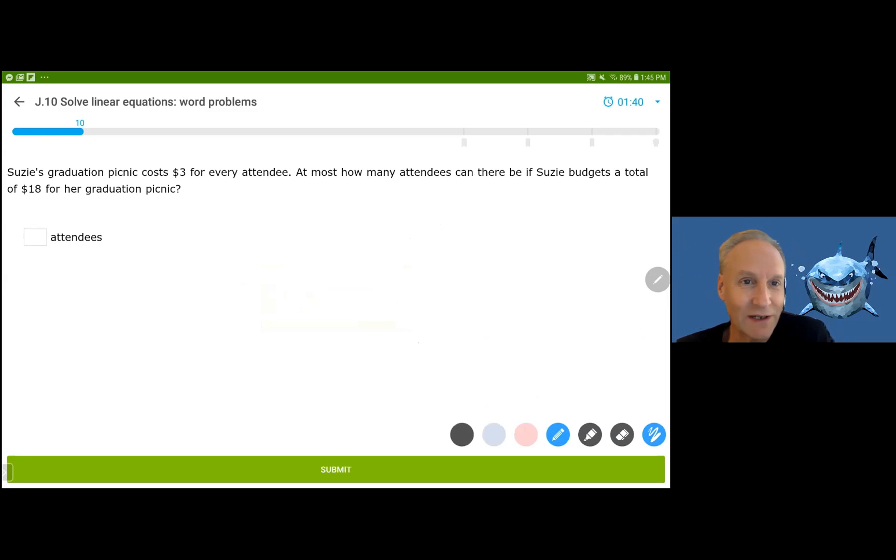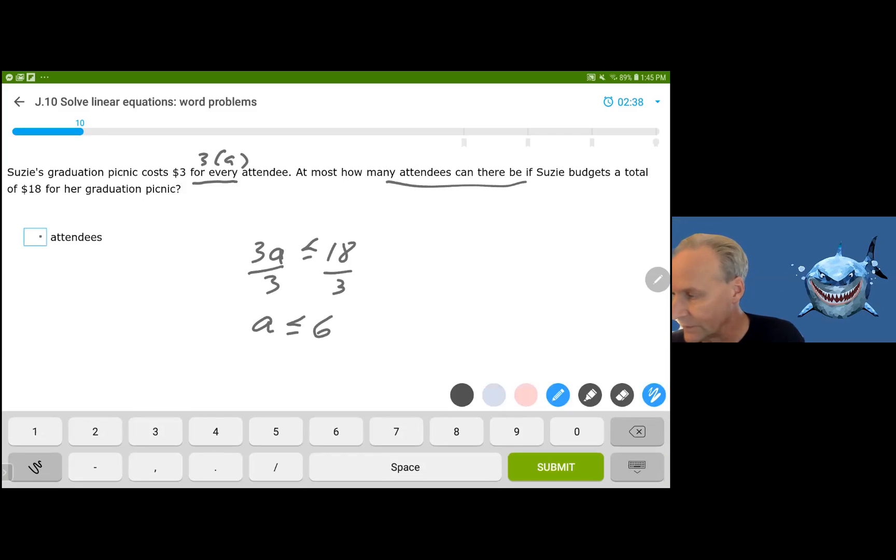So Susie's graduation picnic costs $3 for each attendee. Okay, so we're going to use instead of guests, we're talking about attendees. I'm going to use A for each one. And for every, a good way to think of it is that's multiplying. So it's going to be three times the number of attendees. How many attendees can there be if Susie budgets a total of $18 for her picnic? Well, we want 3A to be less than or equal to 18 actually, but we want to get the maximum number. So it's actually the equation. And in order to solve this, we're going to divide by three on both sides. If this were an inequality, which it is, it could be A could be less than or equal to six attendees. And so the maximum number, how many can there be? They're assuming that it could be anything from zero to six, but six.